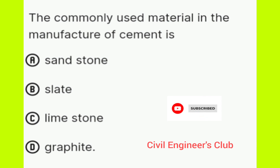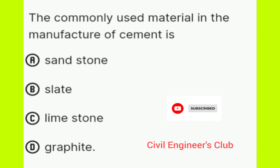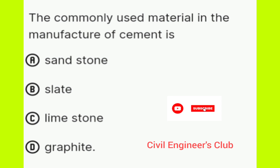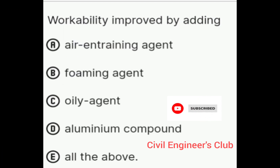Next question: The commonly used material in the manufacture of cement is — Option A: sandstone, Option B: slate, Option C: limestone, Option D: graphite. The correct answer is option C, limestone. The commonly used material in the manufacture of cement is limestone.